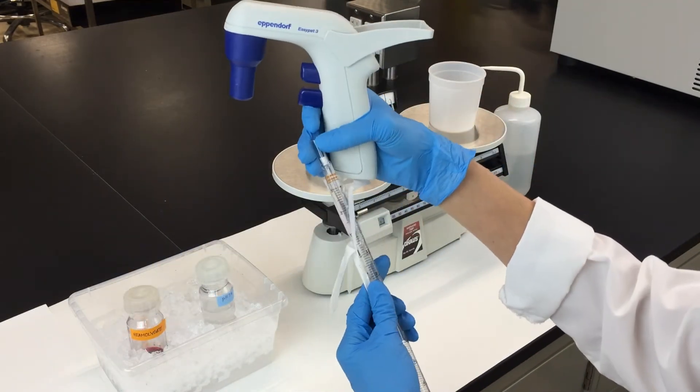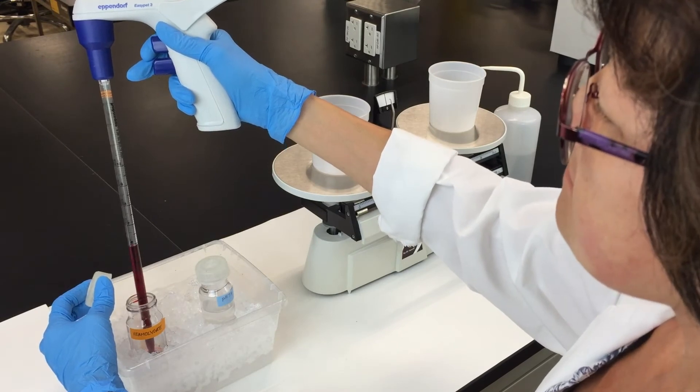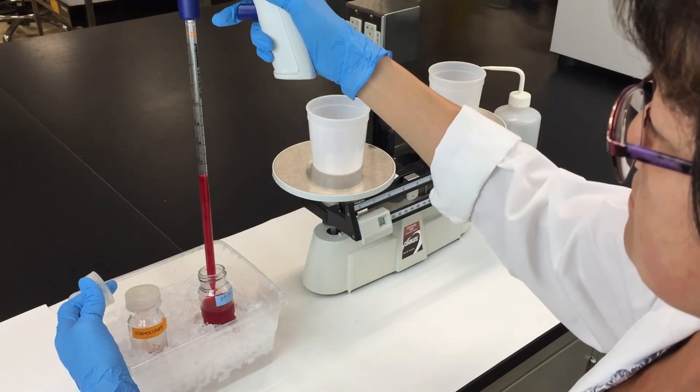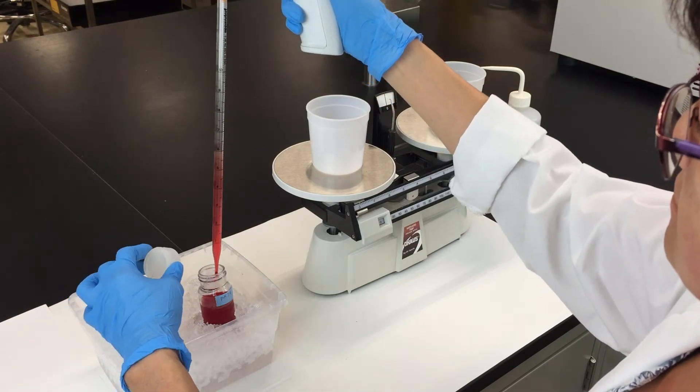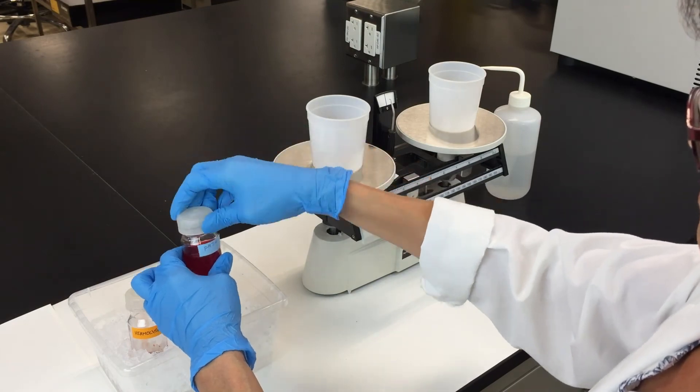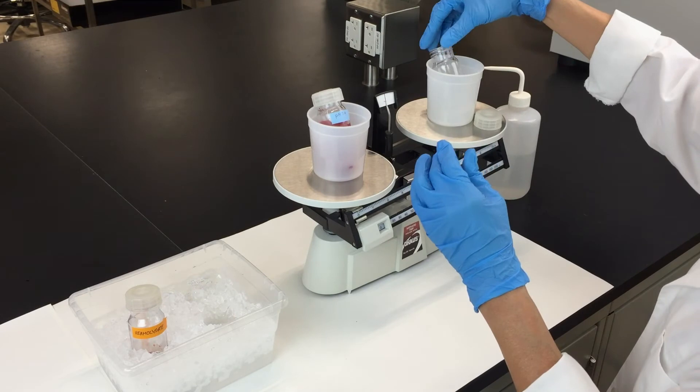Next, add 6 ml of the hemolysate to 45 ml of buffer. For this demonstration, we'll be using buffer pH'd at 7.4. Balance the tube and put it in the centrifuge for another spin.